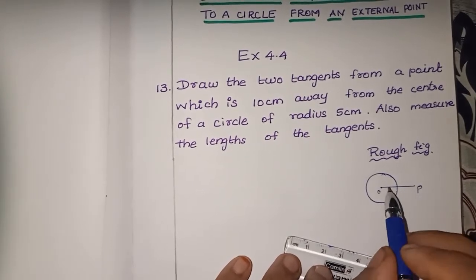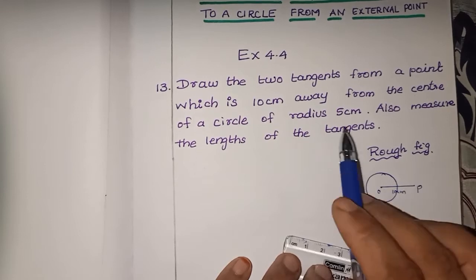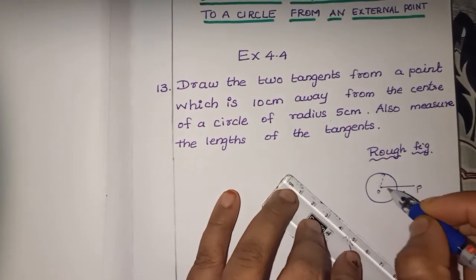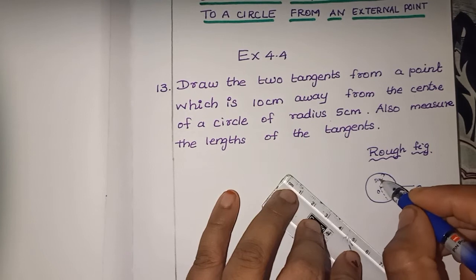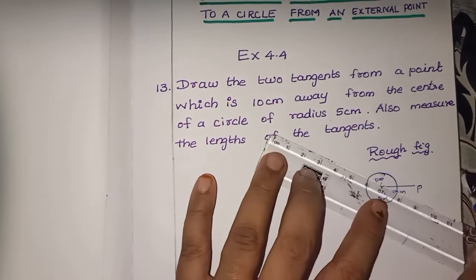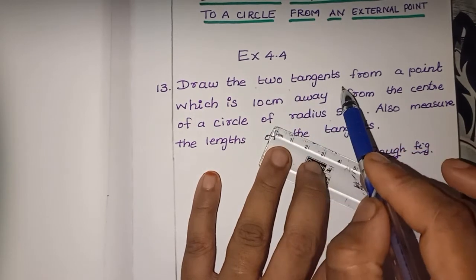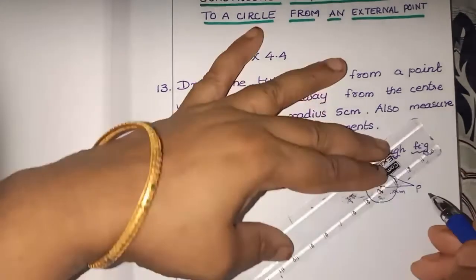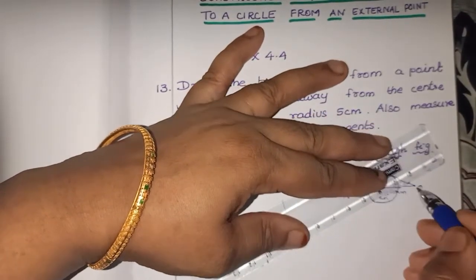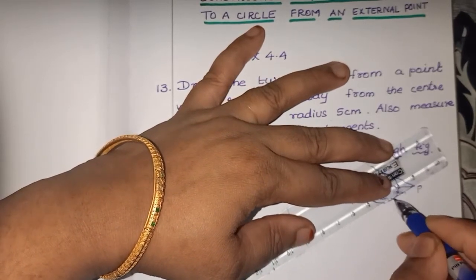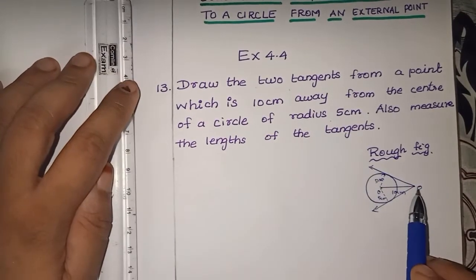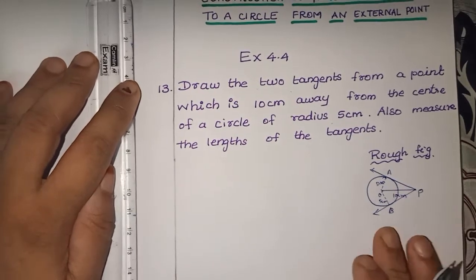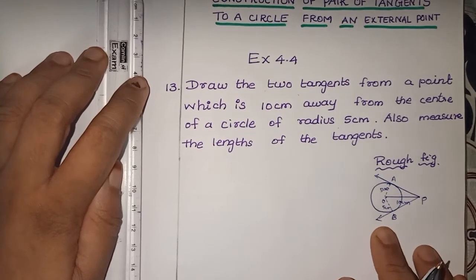It is the center of the circle. The distance is 10 cm from center to the external point P. We connect the tangents from the point P to where they touch the circle. This is the radius: 5 cm. Tangent from an external point - draw two tangents from point P. The tangent PA and PB are the two tangents. PA equals PB. PA and PB is the length to measure.